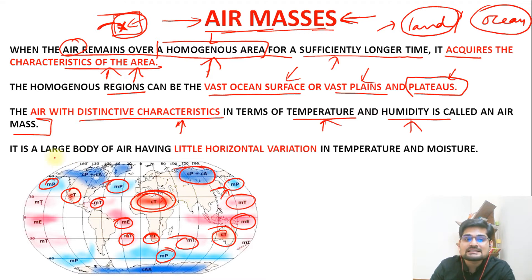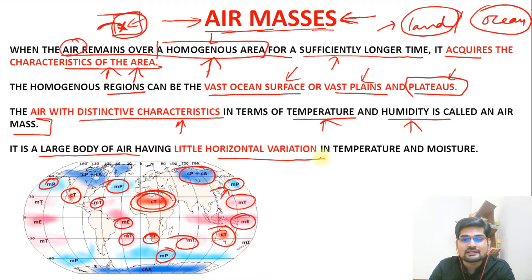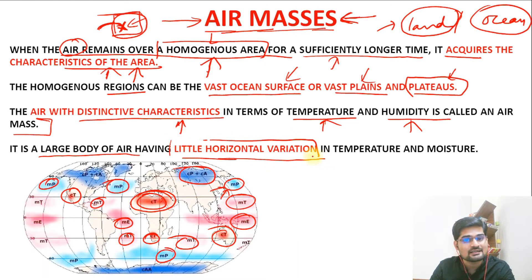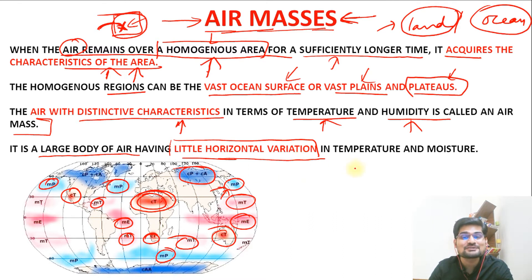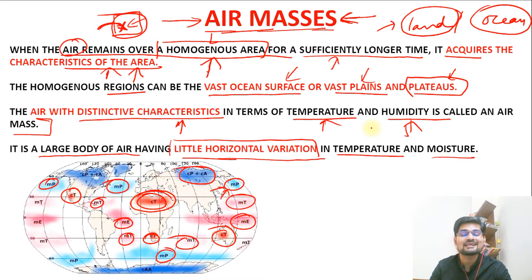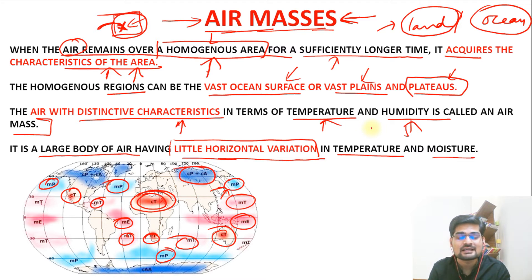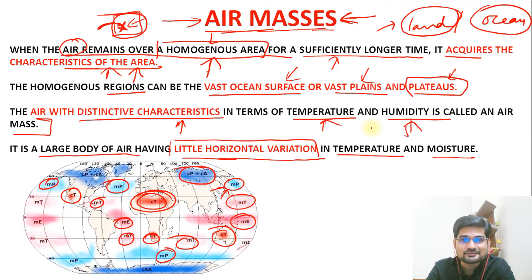Basically, an air mass is a large body of air having little horizontal variation. It is a homogeneous quality of air in terms of temperature and moisture — that is humidity. So this is the basic concept of air mass. Now let's elaborate further about its formation and characteristics.